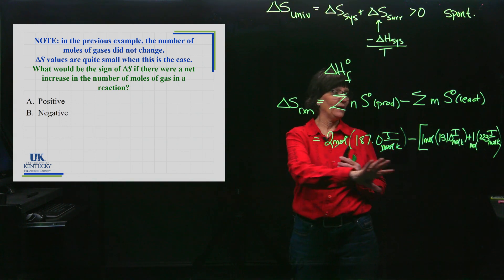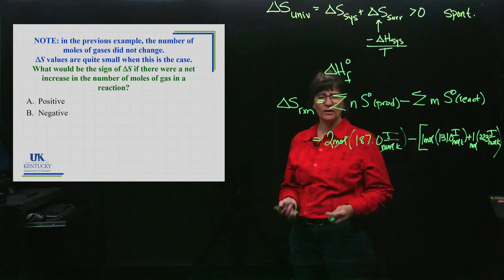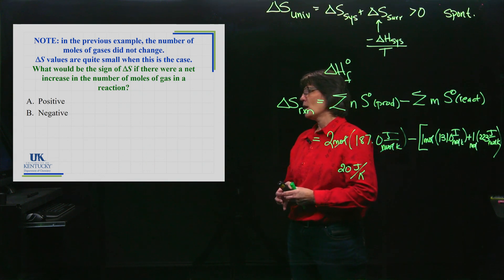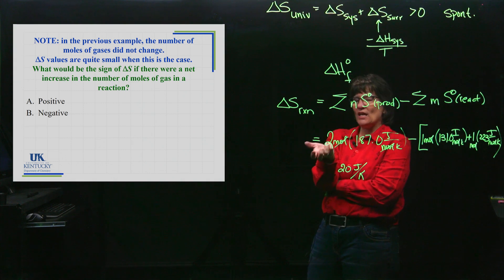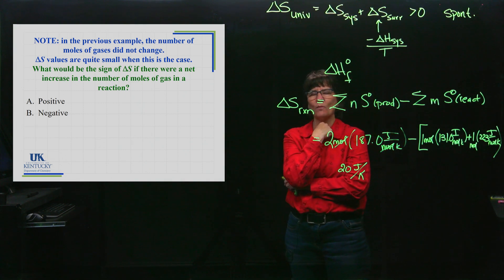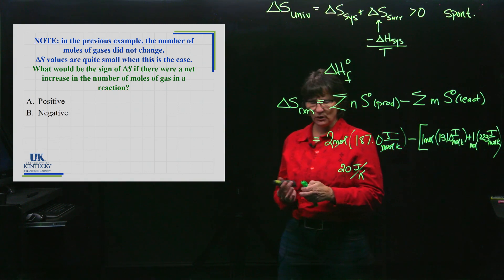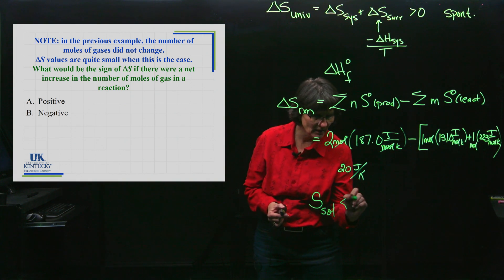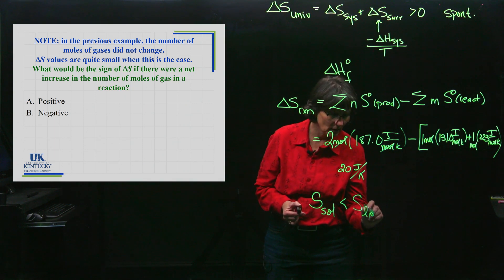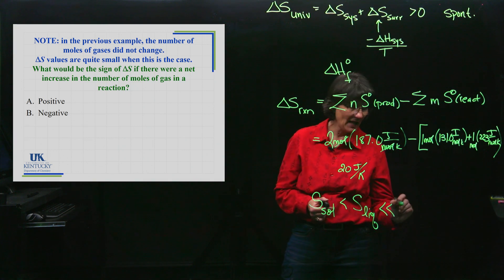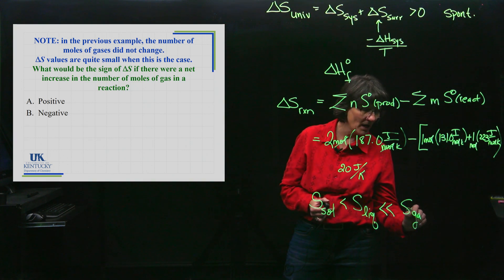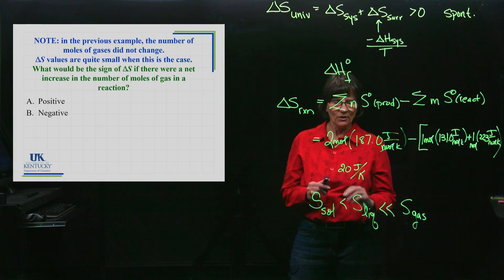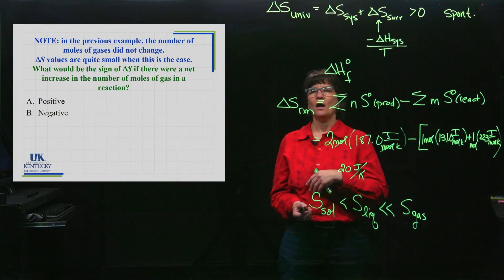Let's look back at the reaction. I have one mole of hydrogen gas and one mole of chlorine gas on the reactant side - that's two moles of gas. On the product side, I have two moles of gas, so the number of moles of gas did not change. That really gives rise to a pretty small value. This is in joules per Kelvin, and at 20 joules per Kelvin, it's a pretty small entropy change. I want you to think about the change that would occur if you had a net increase in the number of moles of gas. The entropy of a solid is less than the entropy of a liquid, and the entropy of a gas is much, much greater than that of the liquid.